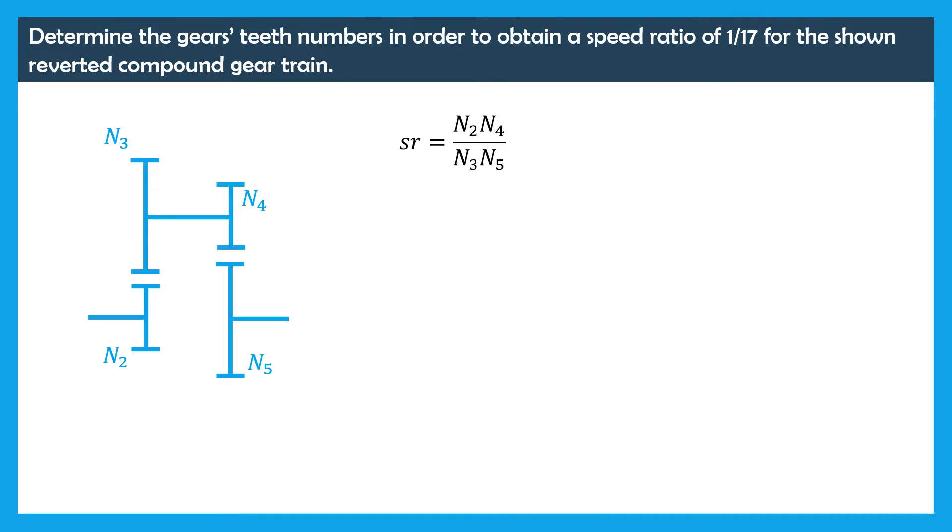To ensure that the axis of rotation of the input gear is in the same direction as the axis of the output gear, we need to have N2 plus N3 equal to N4 plus N5. The sum of the number of teeth in the first stage is equal to the sum of the number of teeth in the second stage.